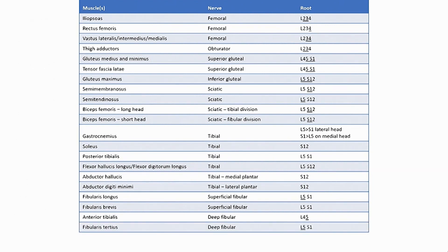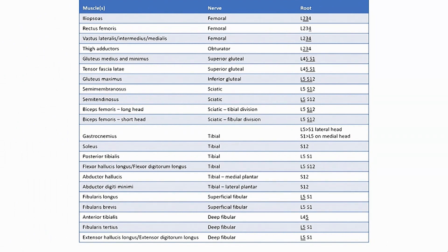Fibularis tertius is innervated by the deep fibular nerve, L5 and S1, primarily L5. The extensor halicis longus and extensor digitorum longus are both innervated by the deep fibular nerve, L5 and S1, primarily L5. Last is the extensor digitorum brevis, innervated by the deep fibular nerve, L5.